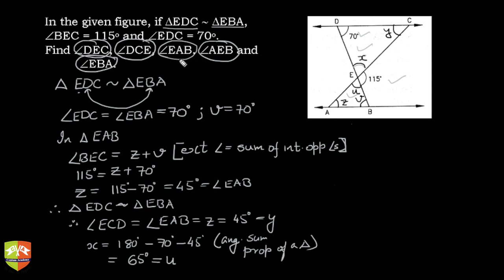I hope you understood this problem. It was a very simple problem. We had to invoke some of our knowledge from previous grades - triangle angle sum property and external angle is equal to sum of interior opposite angles. Using these concepts and the concept of similarity, we could achieve the results.